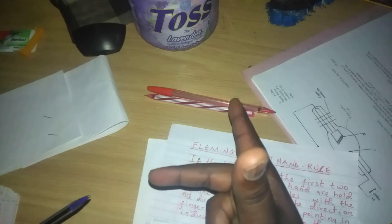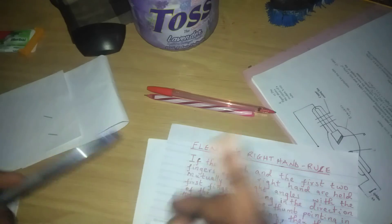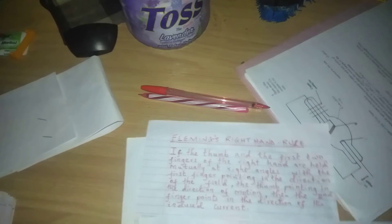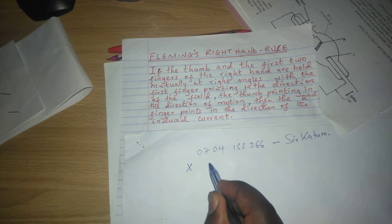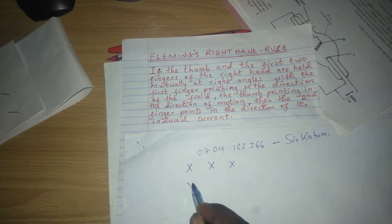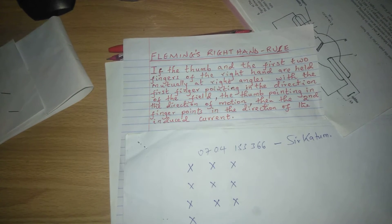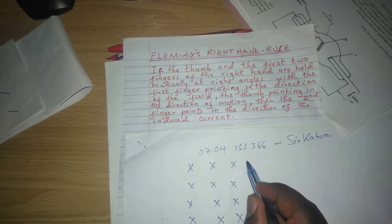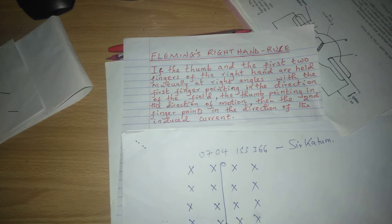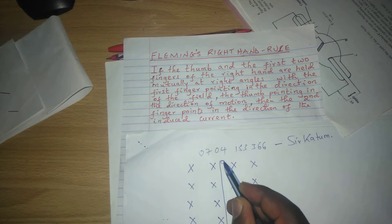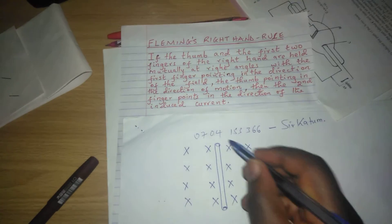We are going to apply Fleming's right hand rule in an example. If we are given a current flowing into the paper — when we have these cross symbols, it means current into the paper — then we have a conductor PQ, a conducting material such that an induced current can flow in it.